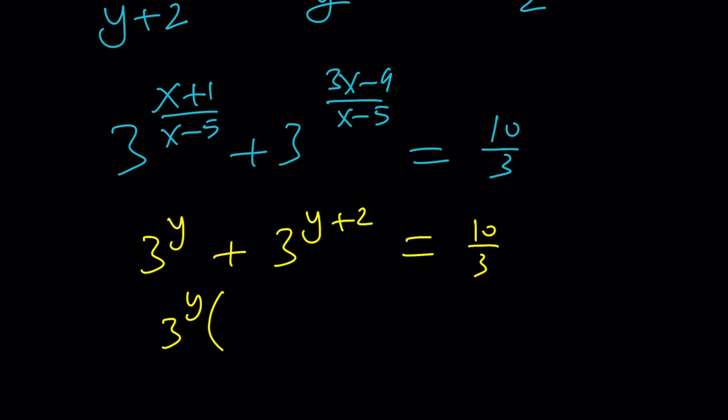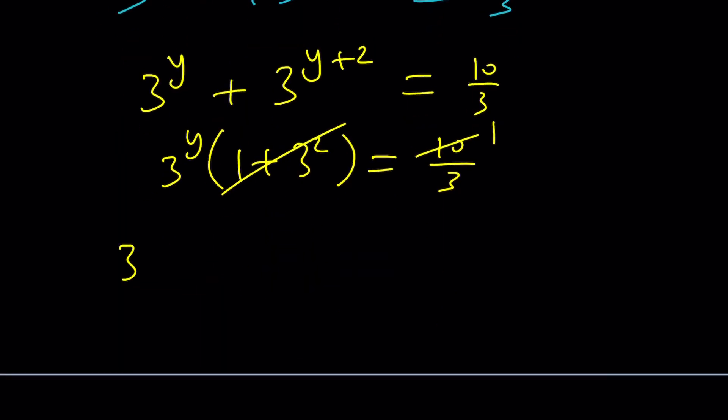Now, we can take out 3^y, just like solving a basic exponential equation. 1 plus 3 squared is 10. Cancel them out, leaving us with 1. 3^y is 3^(-1), which means y is equal to -1. So, it was one of those cases. And what did we call y? (x+1)/(x-5). By the way, let me tell you something.